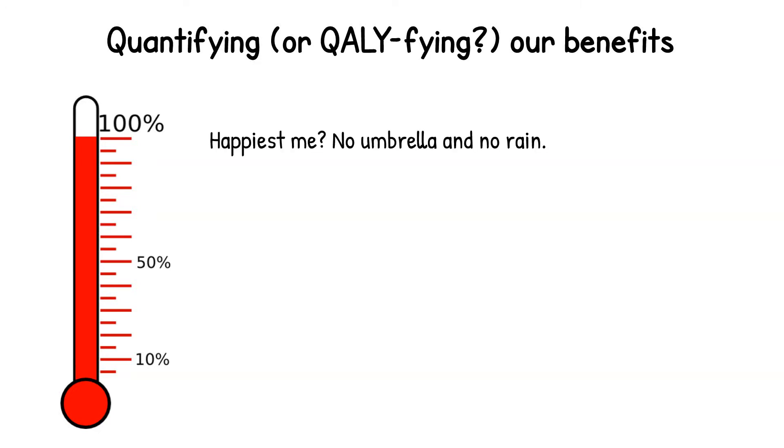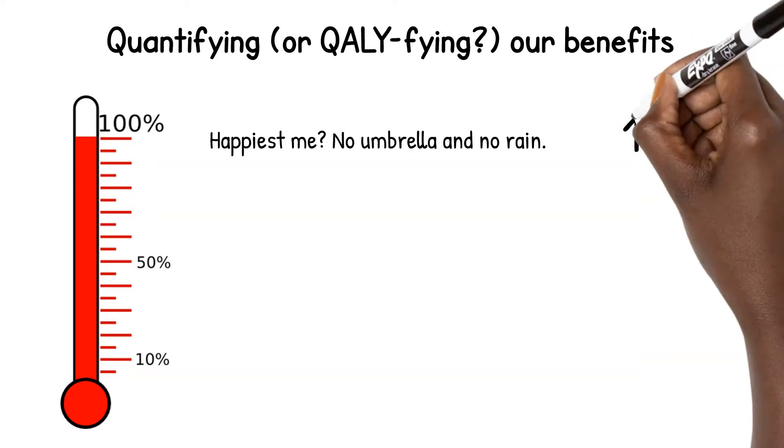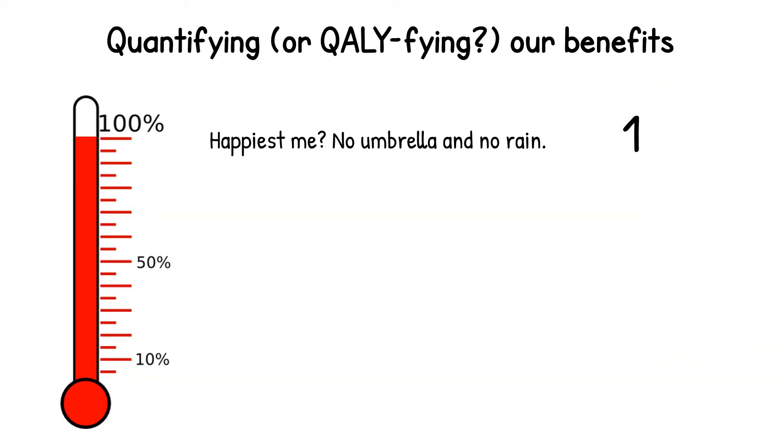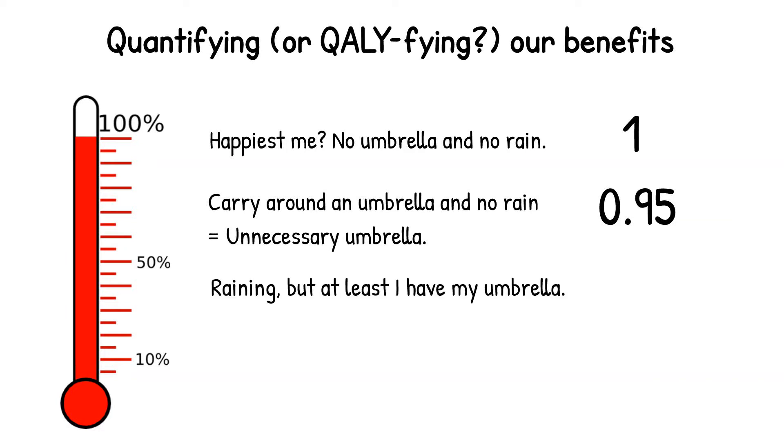So the happiest version of me living my best life is running around unburdened and with no rain. This is going to be our QALY of 1. Our second happiest scenario would be to carry around an umbrella and it doesn't rain. So it was unnecessary, but a little annoying. So this is going to be a QALY of 0.95. Scenario number 3 is where we have an umbrella and it's raining, which is not fun because, you know, rain. But on the other hand, feeling pretty self-satisfied because we had the umbrella. So QALY of 0.9. And last, taking the risk of going umbrella-less and getting drenched, not happy, QALY 0.4.